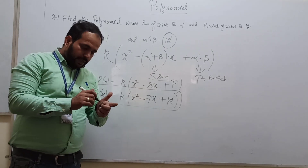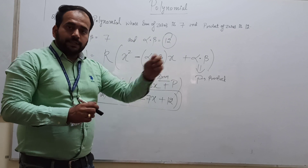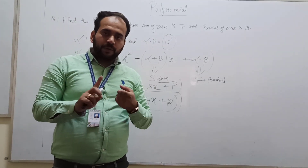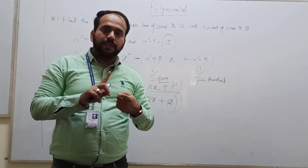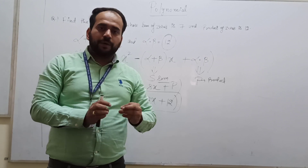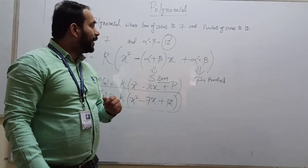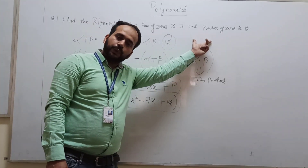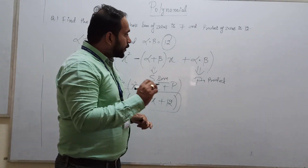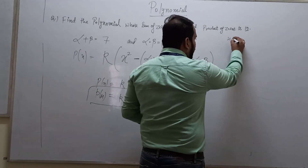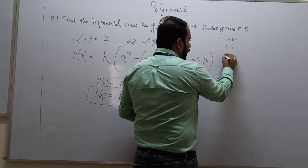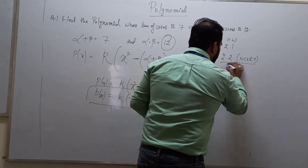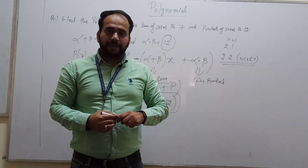Today we have learned three things: how to find the zeros when a graph is given, what is the relationship between zeros and coefficients of a polynomial, and how to find a polynomial when the sum and product of its zeros are given. Your homework is to complete Exercise 2.1 and 2.2 from NCERT. Thank you.